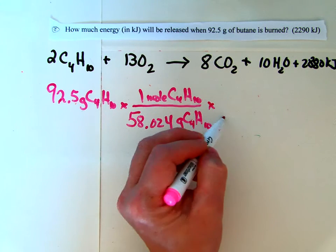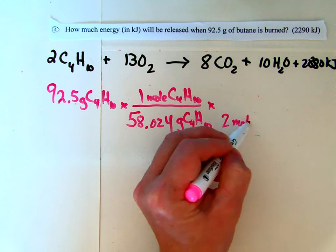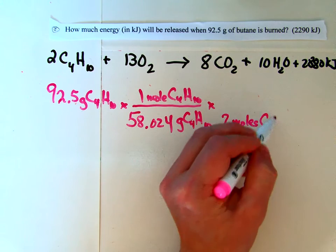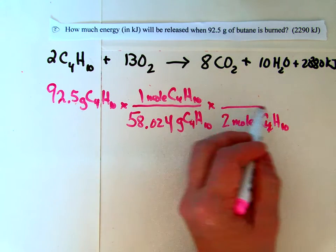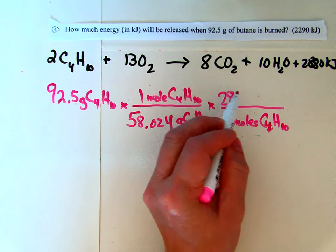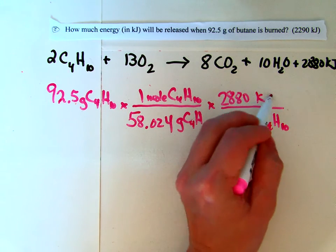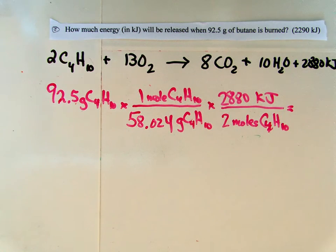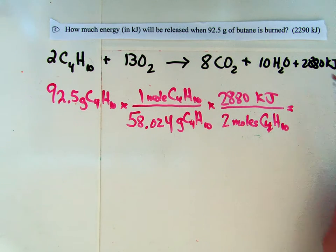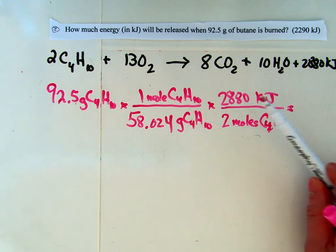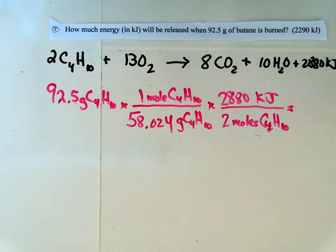We want to get rid of moles of butane, and we know that there are two moles of butane burned for every 2,880 kilojoules of energy. Again, this is like our mole ratio from some of the previous problems, except instead of using moles of energy, you don't measure energy in moles. You measure it in kilojoules, so you use that for the ratio and your conversion factor.